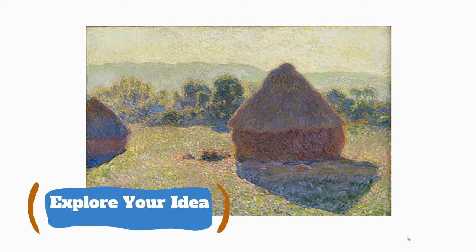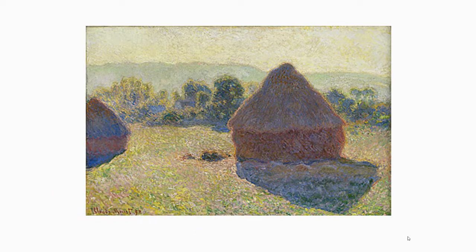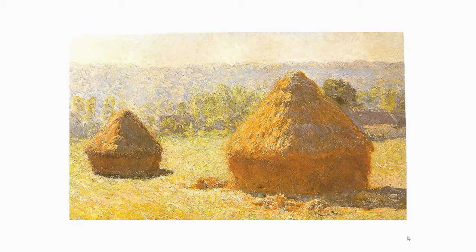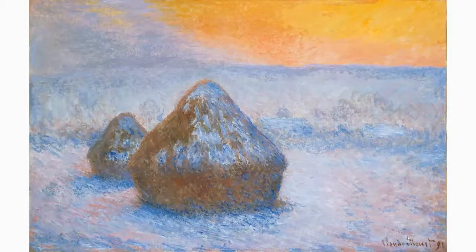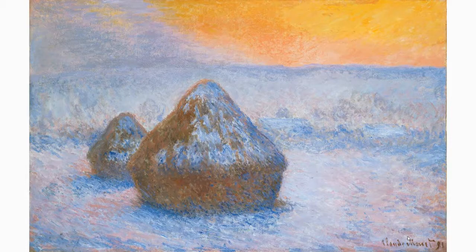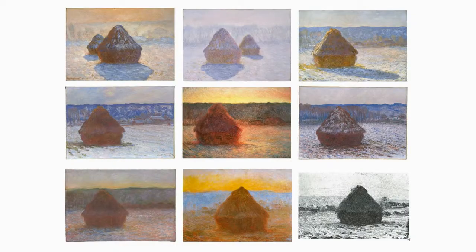Number one: exploring your idea. This is a painting by Monet — it's a haystack. He had an idea: what if I painted a haystack every time the light changed? He'd stand in the field, start painting, and when the light changed he'd put that canvas down, pick up another, and change it every hour. At the end he had a whole bunch of paintings showing the different light.